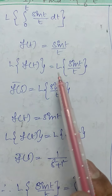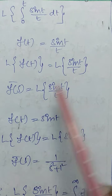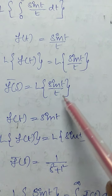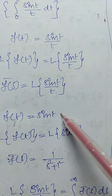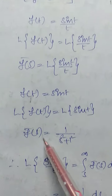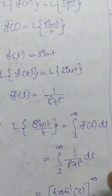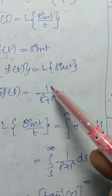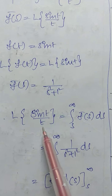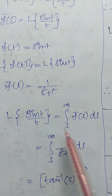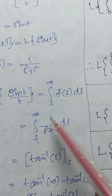Apply the Laplace transform: L{f(t)} = F̄(s) = L{sin t / t}. For the division-by-t formula, the inner function is f(t) = sin t. The Laplace transform of sin t is in the form L{sin at} = a/(s² + a²), so L{sin t} = 1/(s² + 1). Therefore, L{sin t / t} = ∫ₛ^∞ F̄(s) ds = ∫ₛ^∞ 1/(s² + 1) ds.